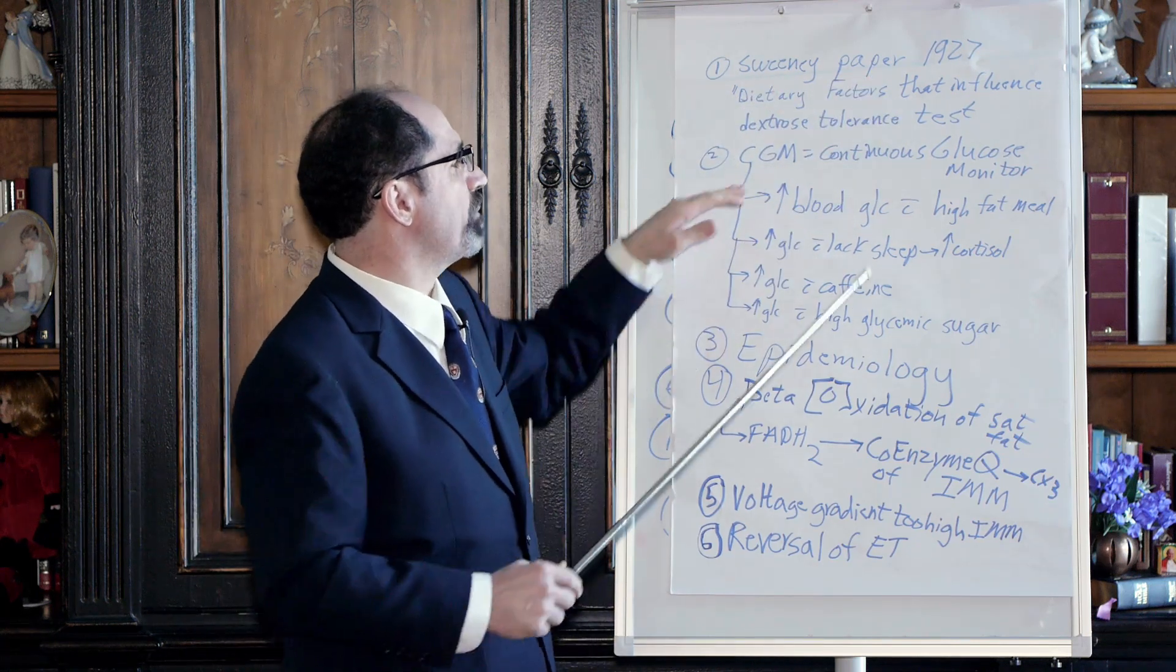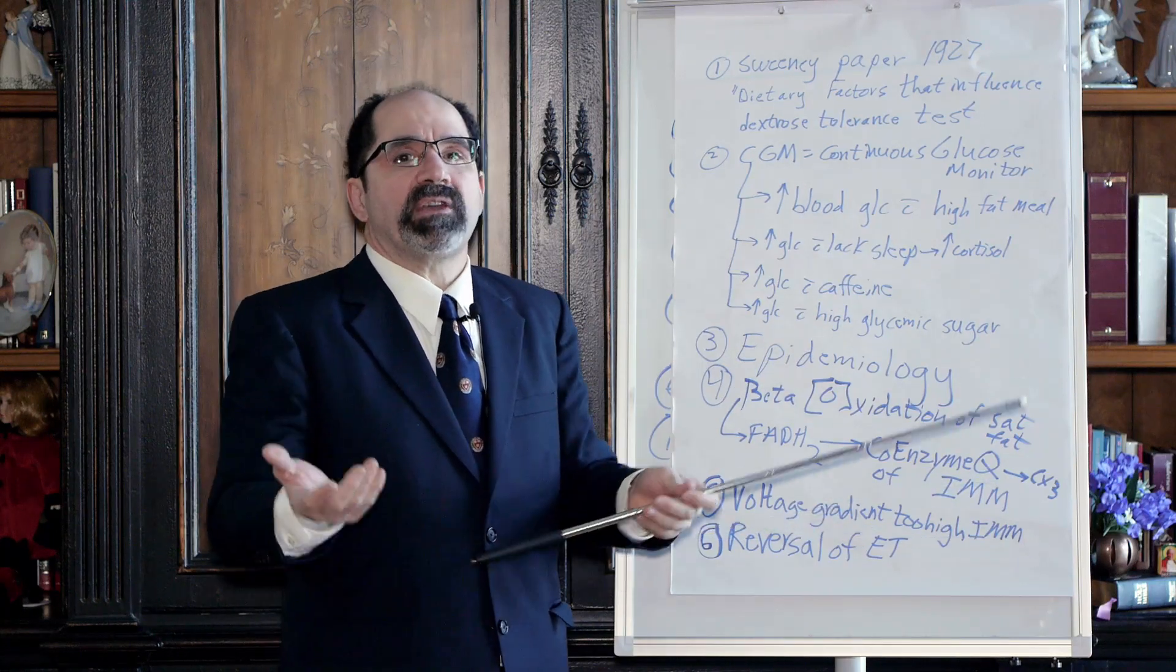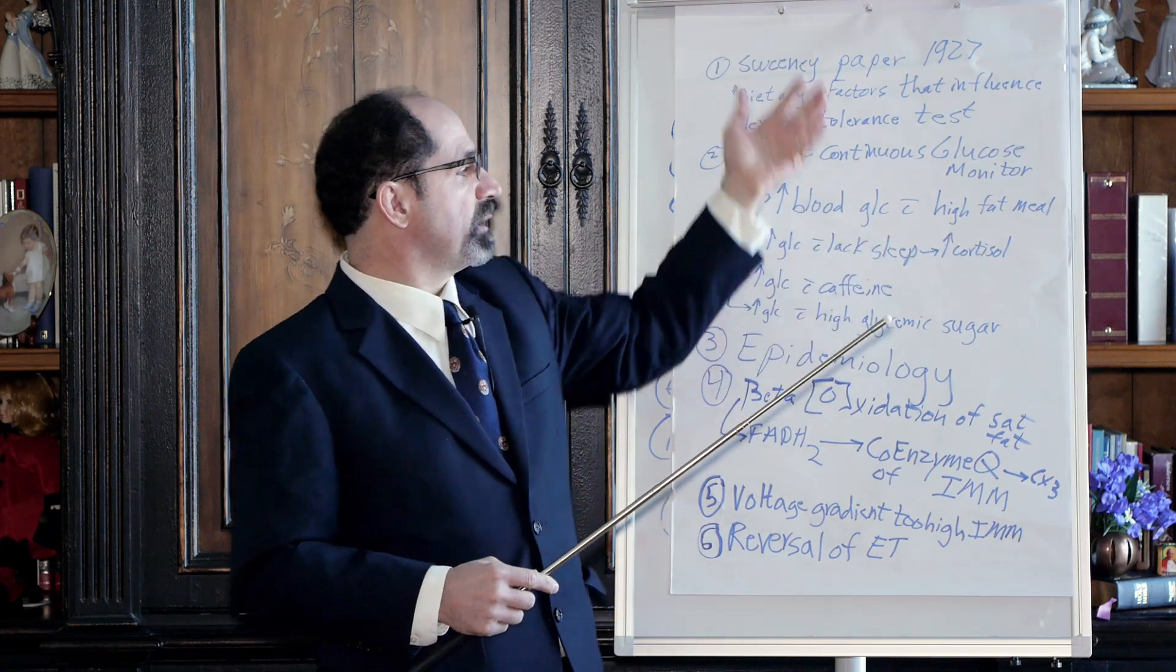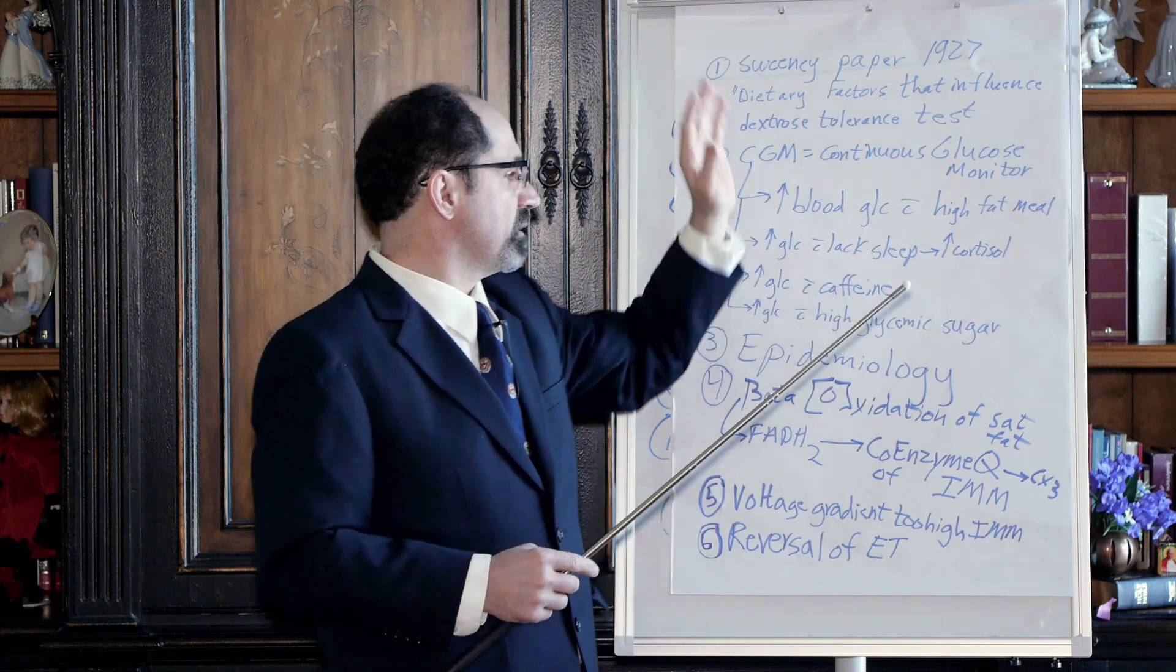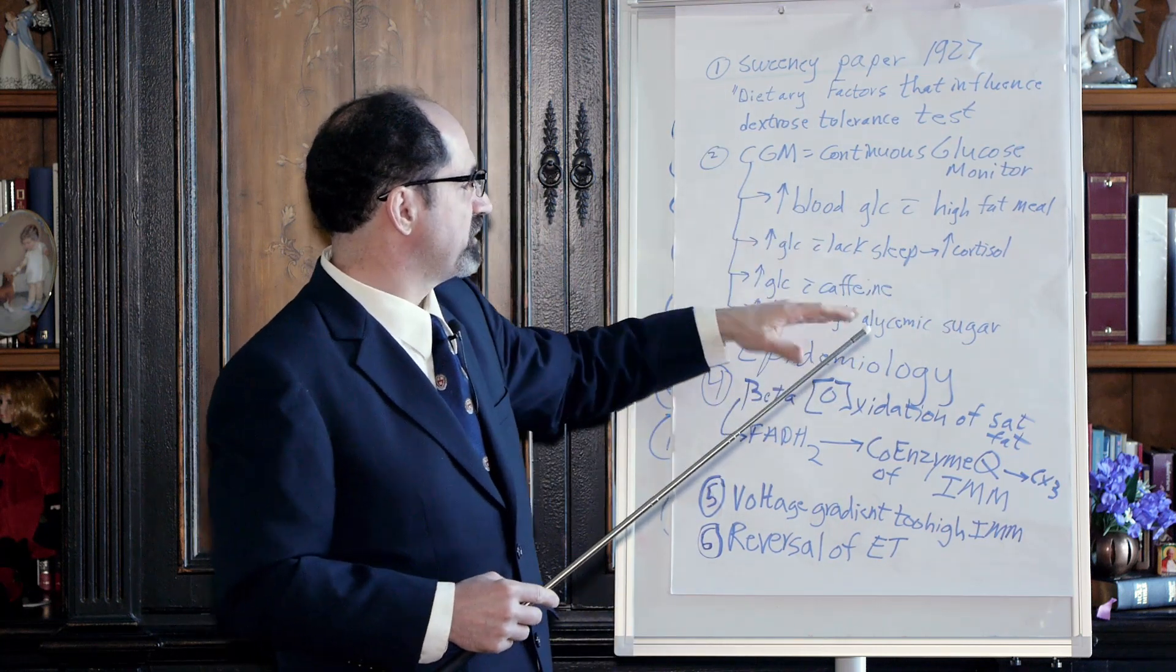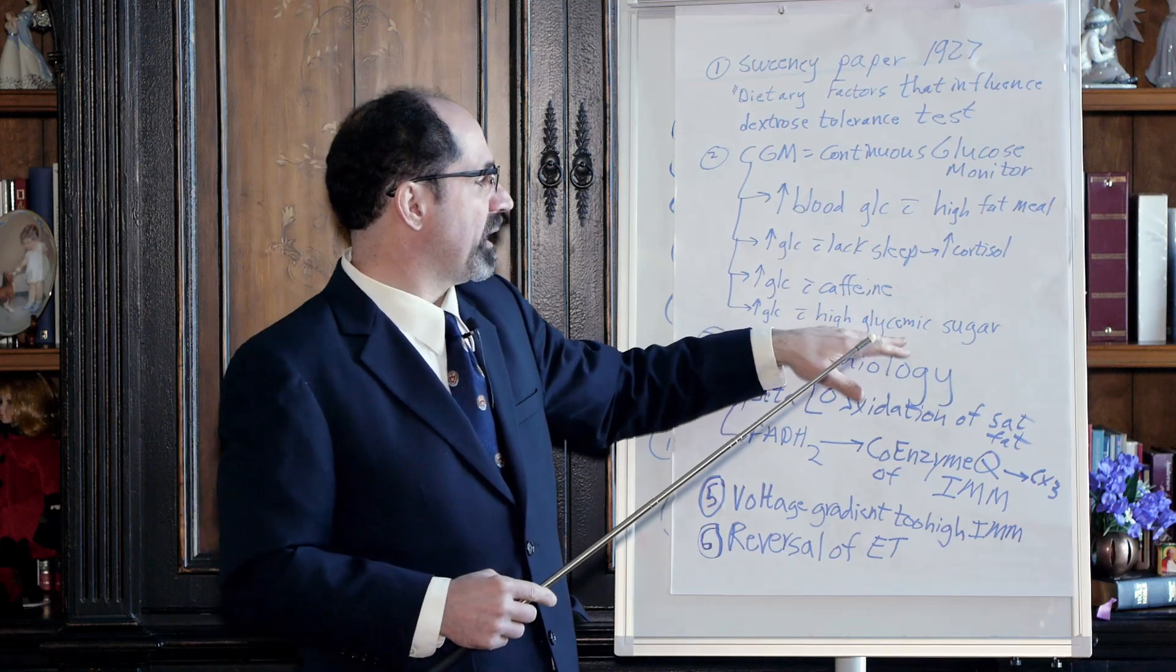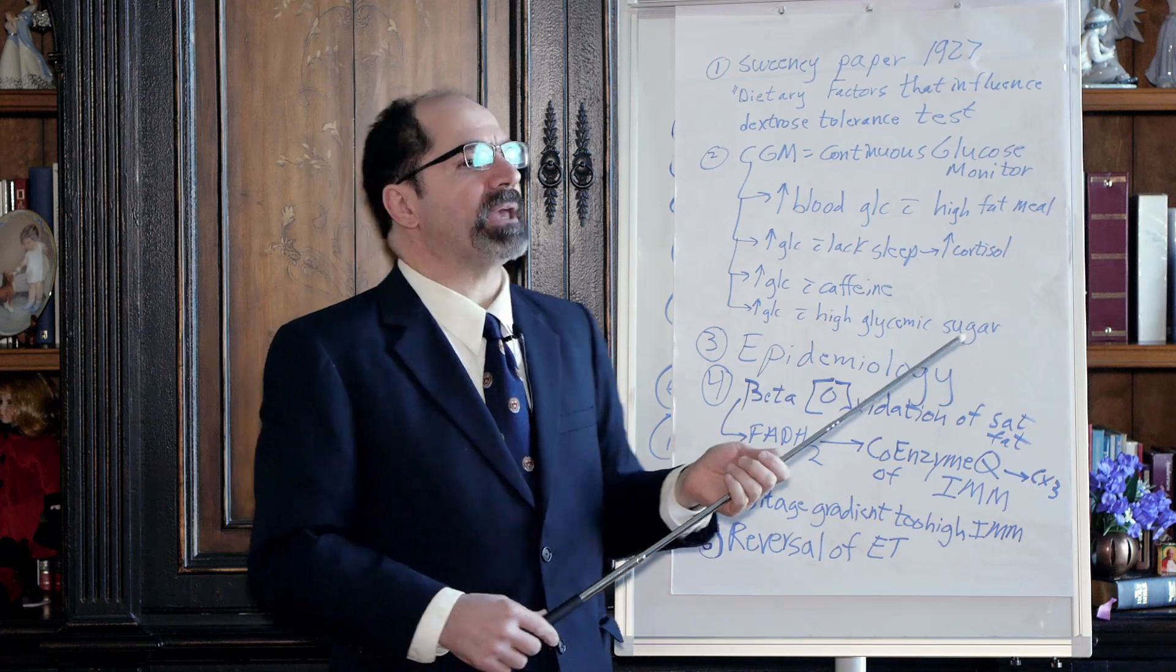Nowadays, too, a lot of people have these continuous glucose monitors, so they can tell what makes their blood glucose level go up. And you'll see that when they eat a high fat meal a couple hours later, the blood glucose goes up, the person gets a lack of sleep, increased cortisol, their glucose is going to go up. Caffeine is going to sort of mimic the acute stress response, glucose is going to go up. High glycemic carbohydrate meal, glucose is going to go up.